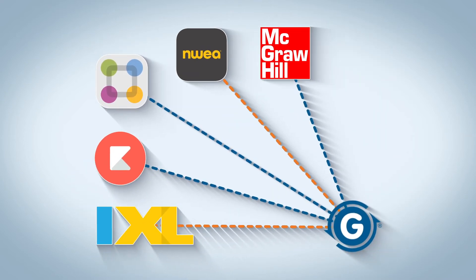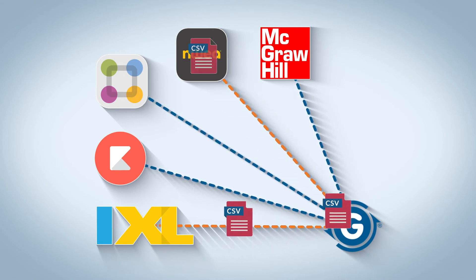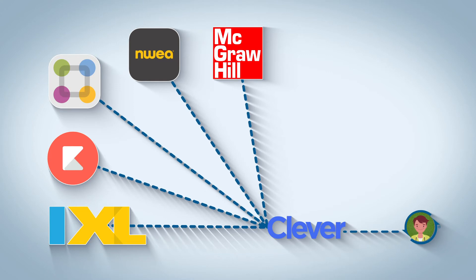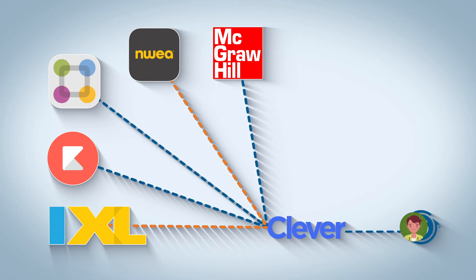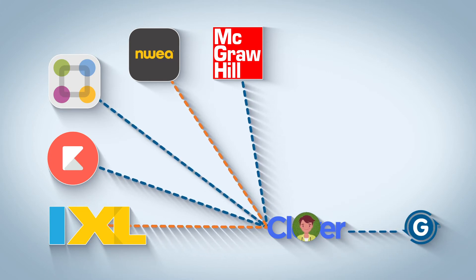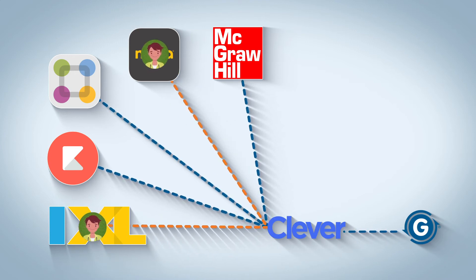You could export these rosters from Gradelink as a CSV and then import those rosters into these other applications. But if there are a lot of other apps or your rosters are changing really often, this could end up taking a lot more time than you really want. The integration with Clever automates this process using an API, so when you add a new student to Gradelink, your rosters are synced with Clever, and then Clever forwards those rosters to the various apps that you explicitly pick.